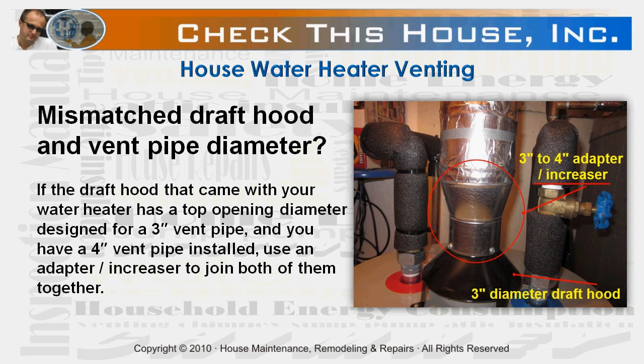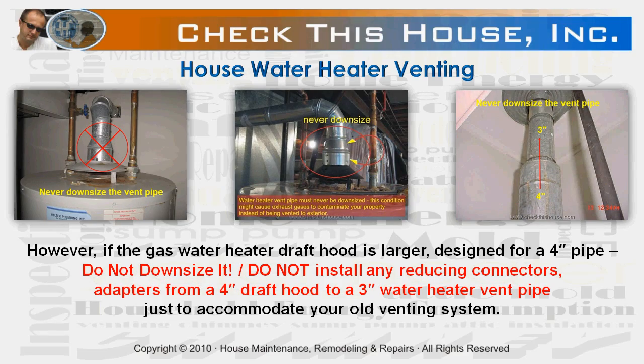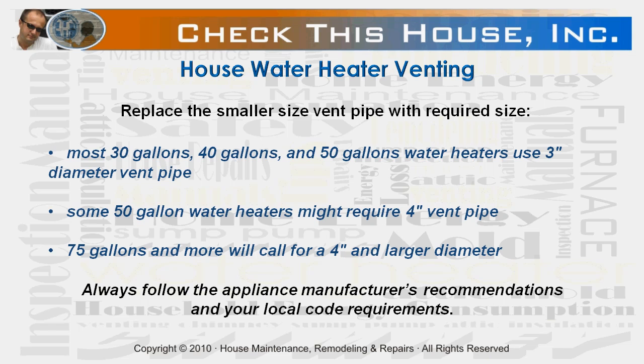When you purchase a new appliance, you might run into a mismatched draft hood and vent pipe diameter. There are two scenarios. For example, if the draft hood that came with your water heater has a top opening diameter designed for a three inch vent pipe and you have a four inch vent pipe installed, use an adapter and increaser to join both of them together. However, if the gas water heater draft hood is larger — designed for a four inch diameter vent pipe — do not downsize it. Do not install any reducing connectors or adapters from a four inch draft hood to a three inch vent pipe just to accommodate your old venting system. Downsizing will prevent exhaust gases from discharging properly through the vent pipe and instead might partially or even completely direct them into your house.